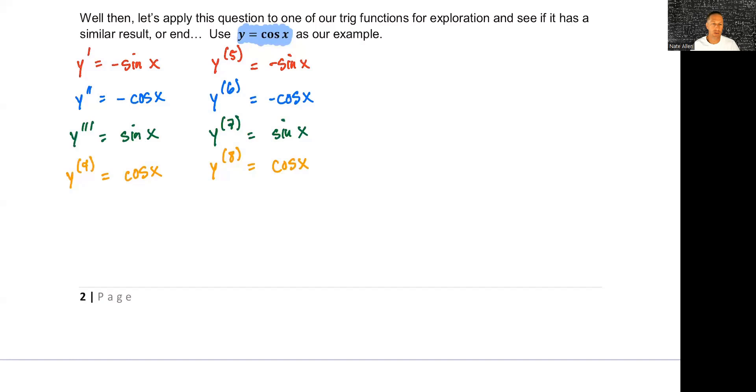So if you started working these out you hopefully saw a pattern and stopped. If you keep going and do the ninth, tenth, eleventh, twelfth derivative, you're going to get the exact same values. I tried to color coordinate them so that you could see. After I took my original function, I just chose cosine, and I took the first derivative, I know that's negative sine. Now the second derivative, or derivative of that, I know is the derivative of sine is cosine. Because it's negative, it's going to stay negative.